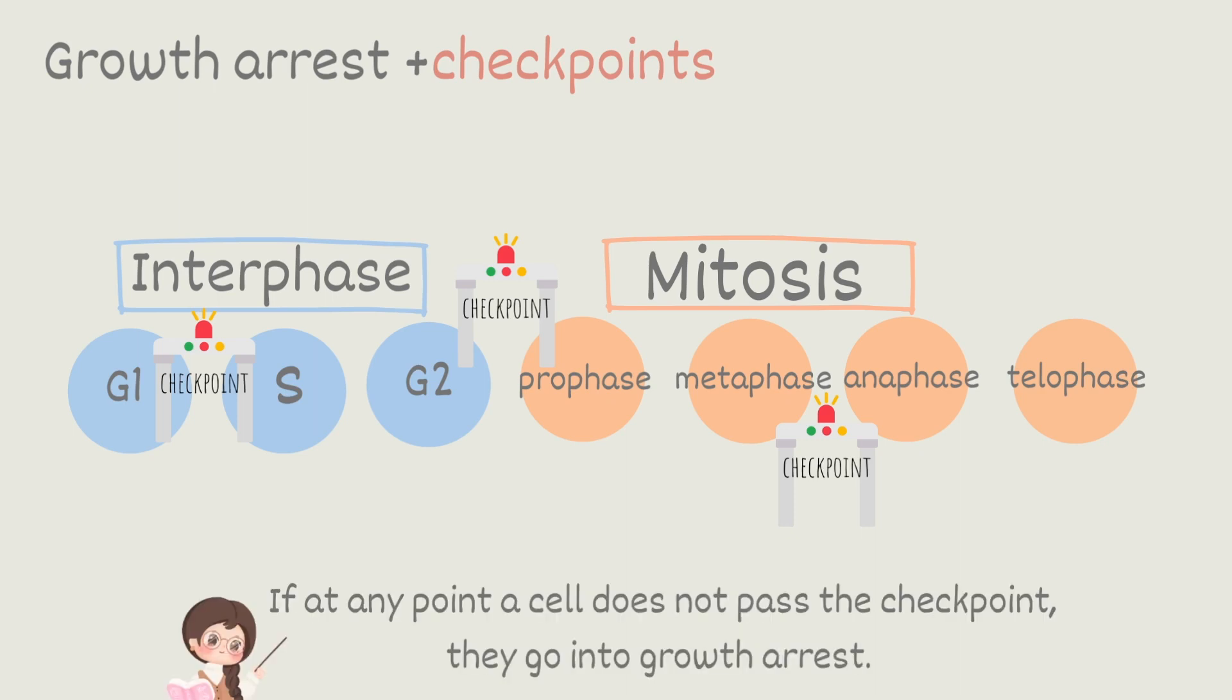Passing means they have this checkoff list and the cells must have everything properly checked off. If it's unable to check off everything on the list, it will be arrested. So if at any point a cell does not pass the checkpoints, they go into growth arrest.